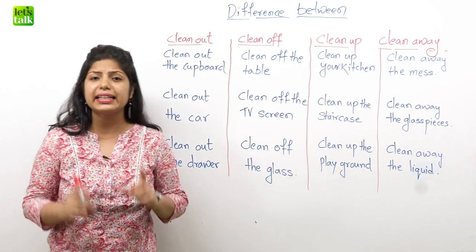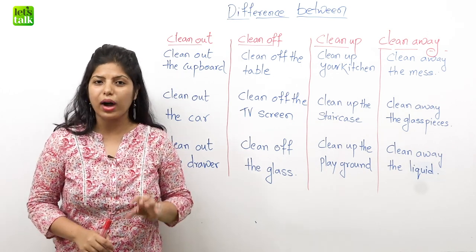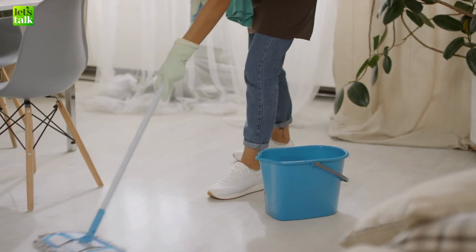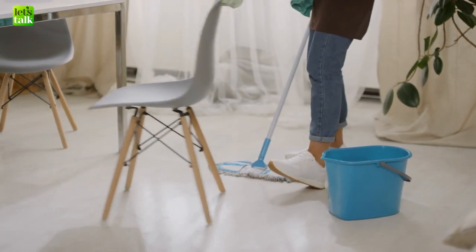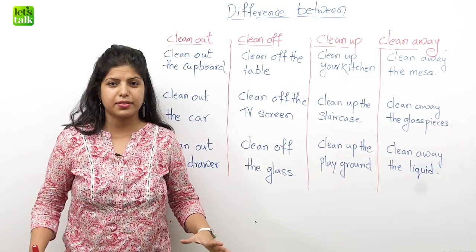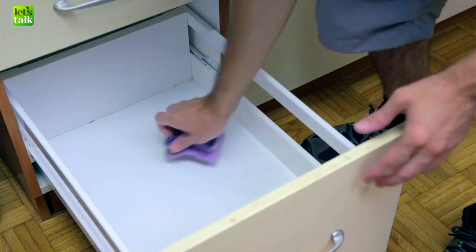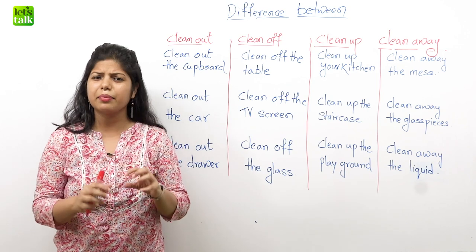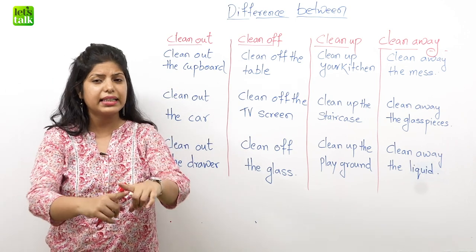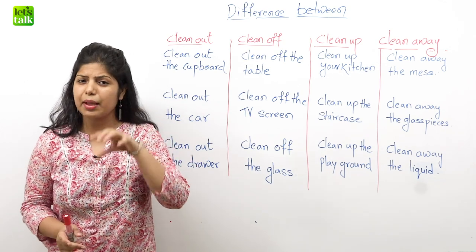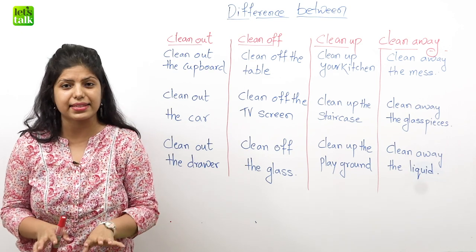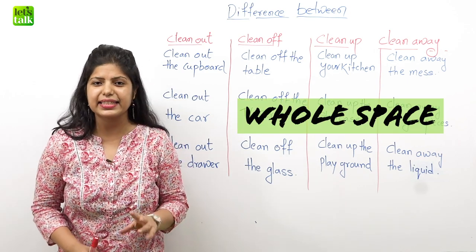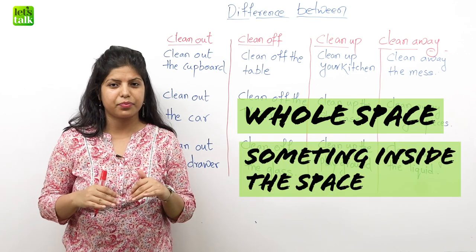Now specifically when you talk about cleaning, remember this always — there are two things. One is the space that you are going to clean. For example, if you have a living room, there's a different phrase altogether for cleaning that huge space. However, if you are going to clean something which is in the living room, like some boxes — some kind of mess, something not required — you are not cleaning the space or the living room, you are cleaning something inside it, some kind of dirt or mess. So two things when it comes to cleaning: the space, and the mess or dirt inside that space.